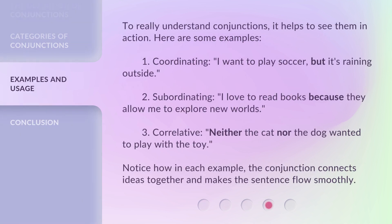To really understand conjunctions, it helps to see them in action. Here are some examples. One, coordinating: 'I want to play soccer, but it's raining outside.' Two, subordinating: 'I love to read books because they allow me to explore new worlds.' Three, correlative: 'Neither the cat nor the dog wanted to play with the toy.' Notice how in each example, the conjunction connects ideas together and makes the sentence flow smoothly.